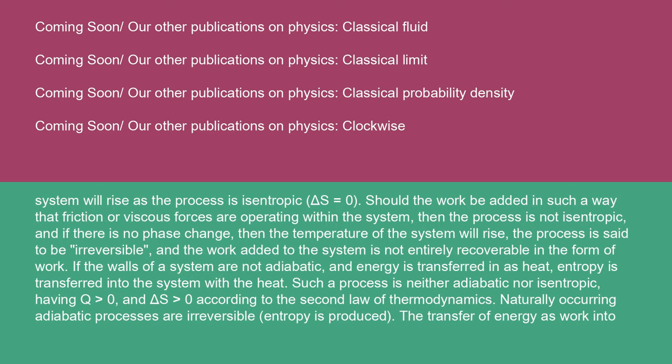If the walls of a system are not adiabatic, and energy is transferred in as heat, entropy is transferred into the system with the heat. Such a process is neither adiabatic nor isentropic, having Q > 0 and ΔS > 0 according to the second law of thermodynamics. Naturally occurring adiabatic processes are irreversible — entropy is produced.